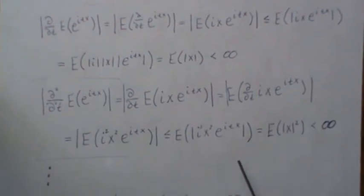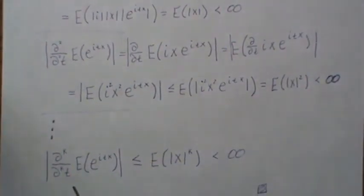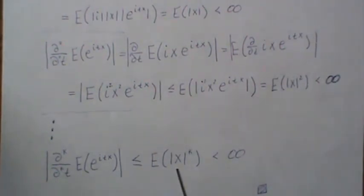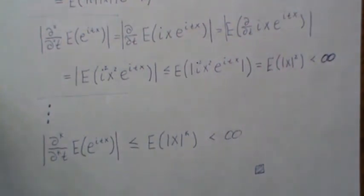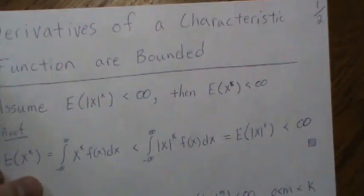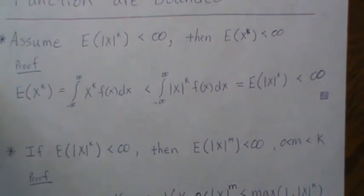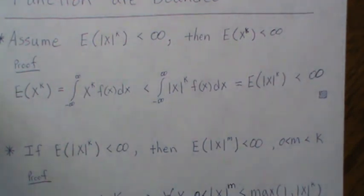And similarly, by continuing this argument, you can show that the k-th derivative of the characteristic function satisfies |φ^(k)(t)| ≤ E[|X|^k], which is finite. So the k-th derivative of the characteristic function is bounded, assuming the k-th moment is finite. That's all for today. We're going to make use of these properties in the upcoming videos. I hope you enjoyed it — if you did, please like and subscribe so you don't miss the next one. Thanks, bye.